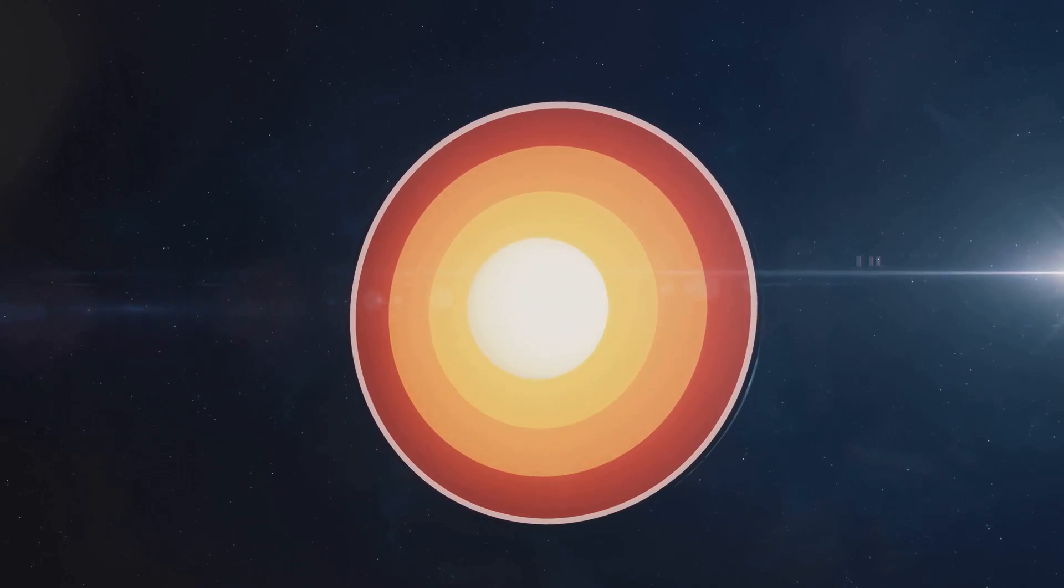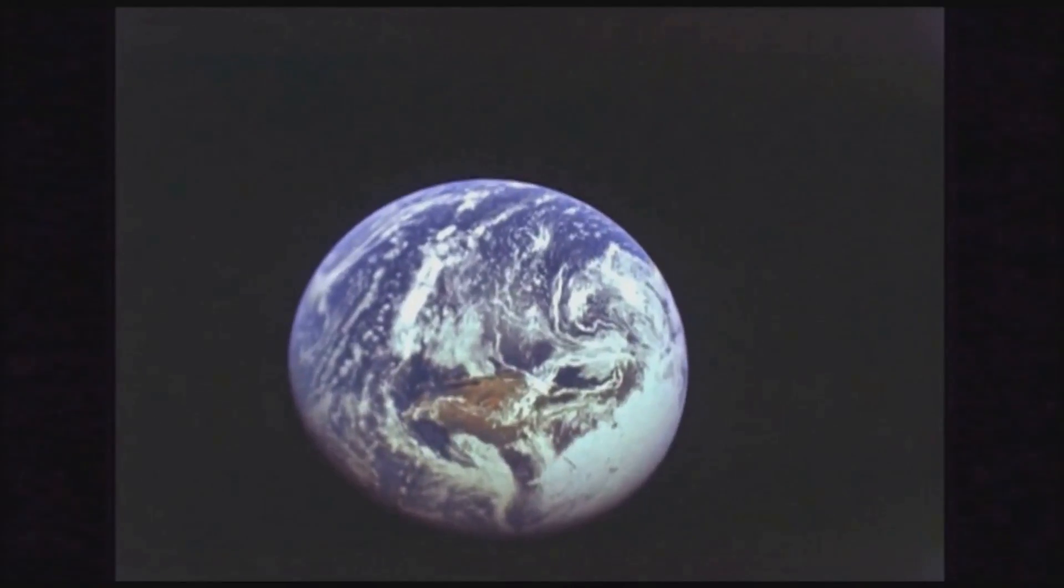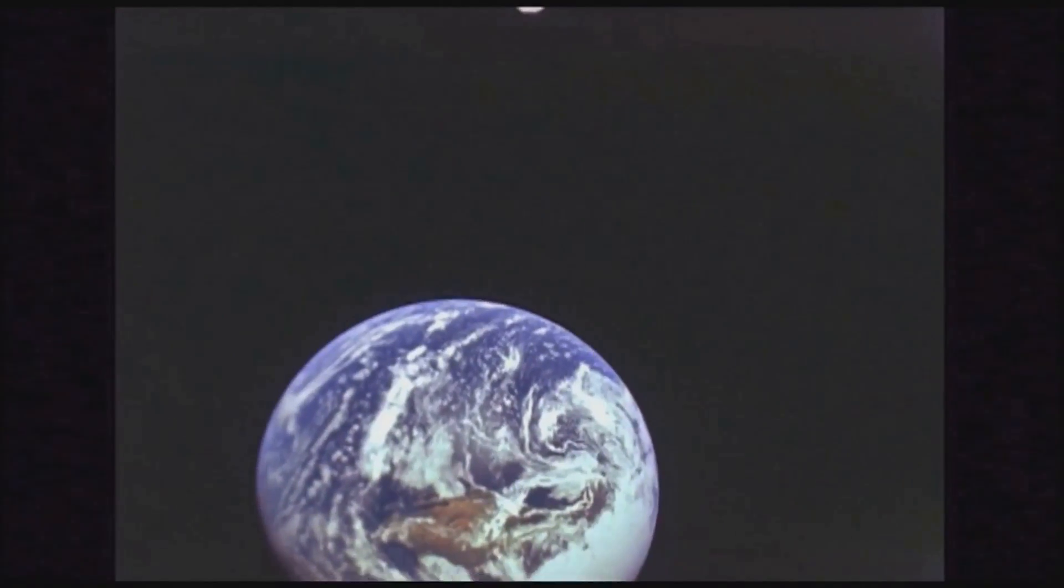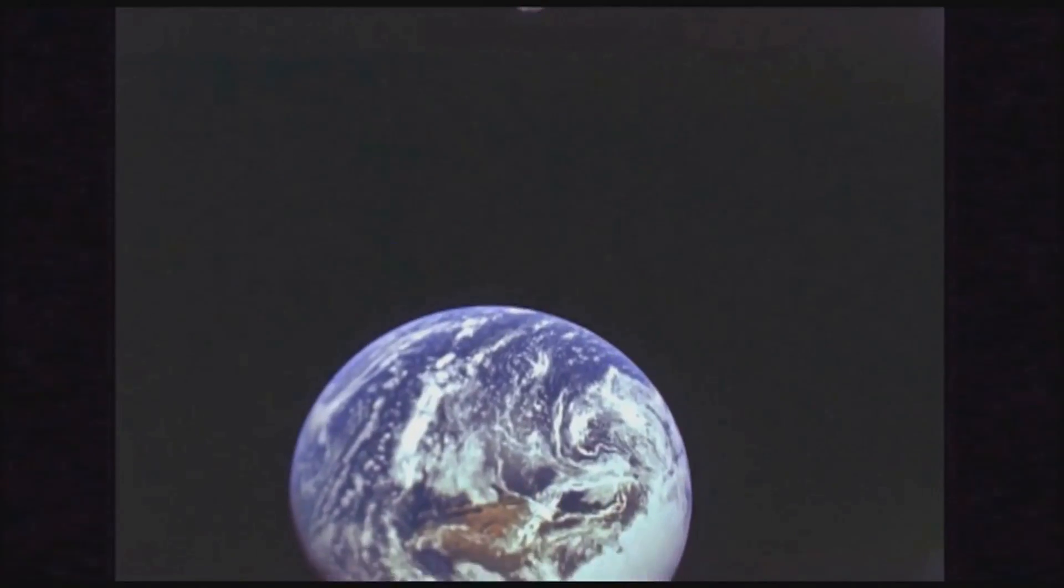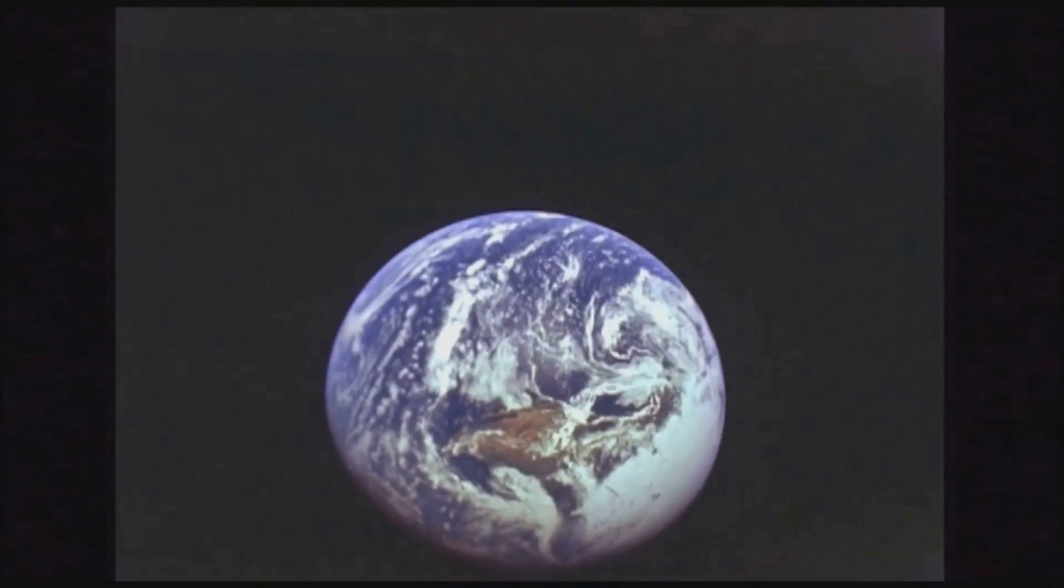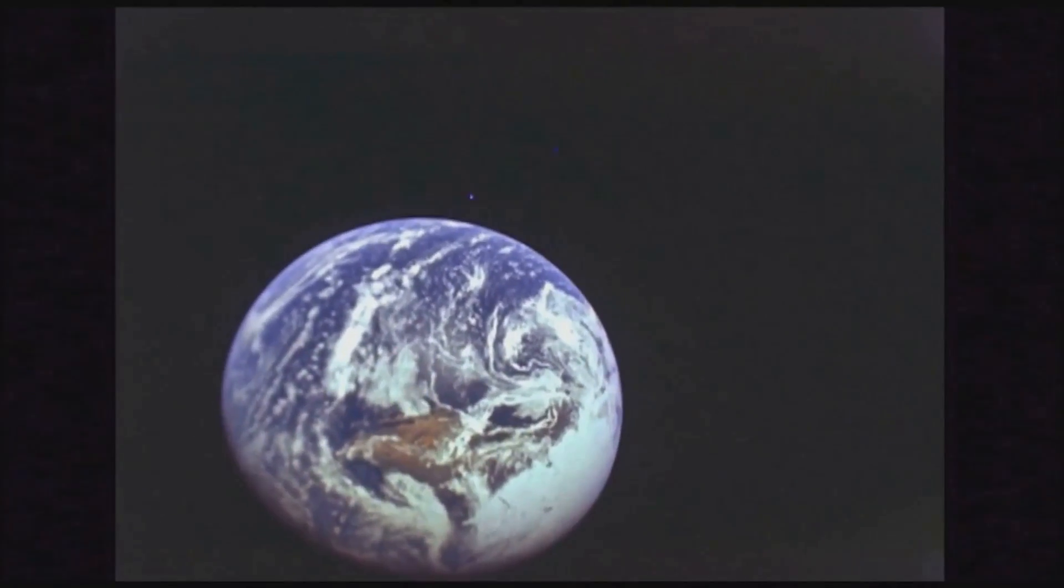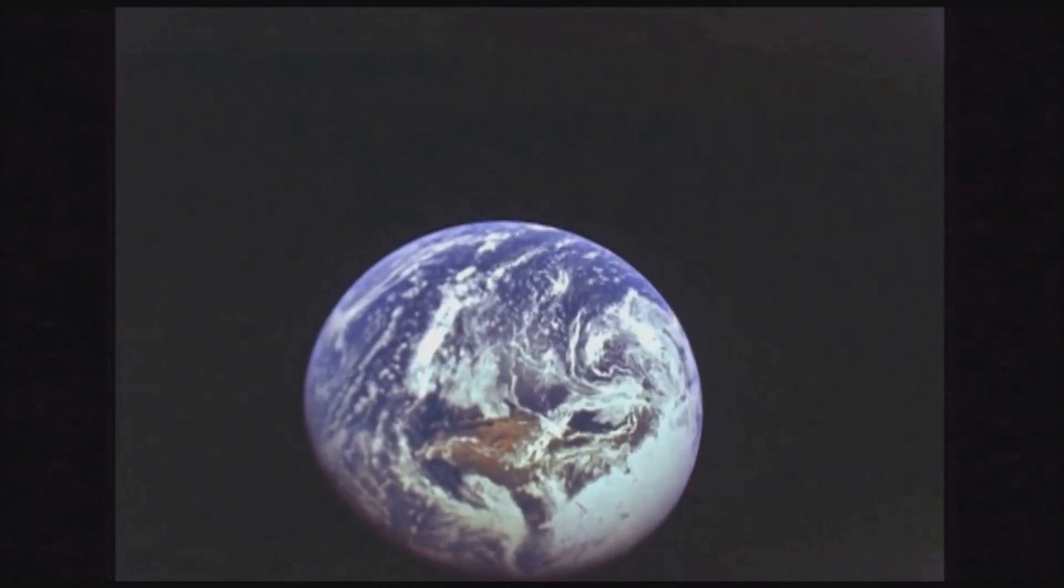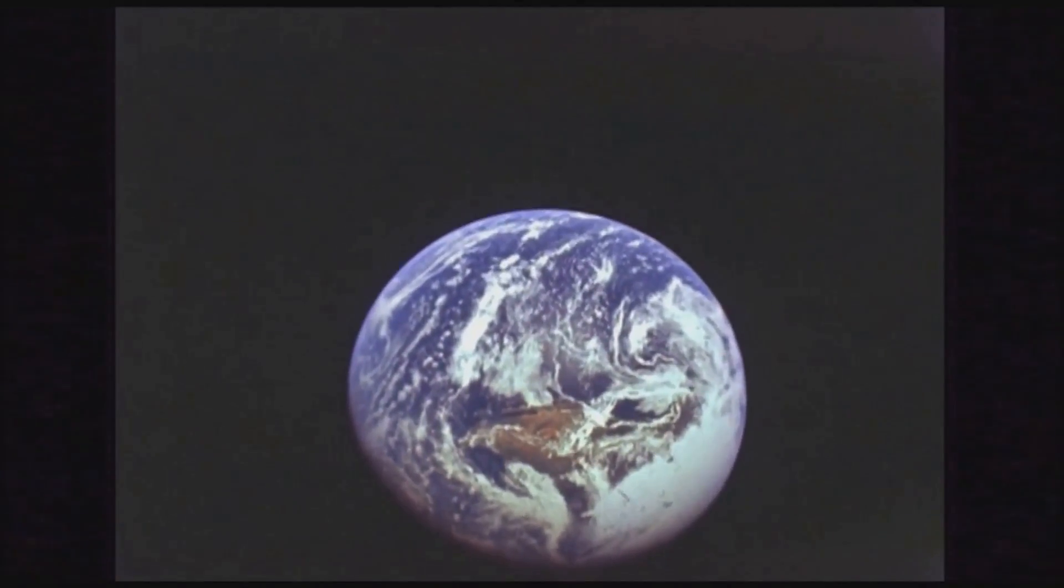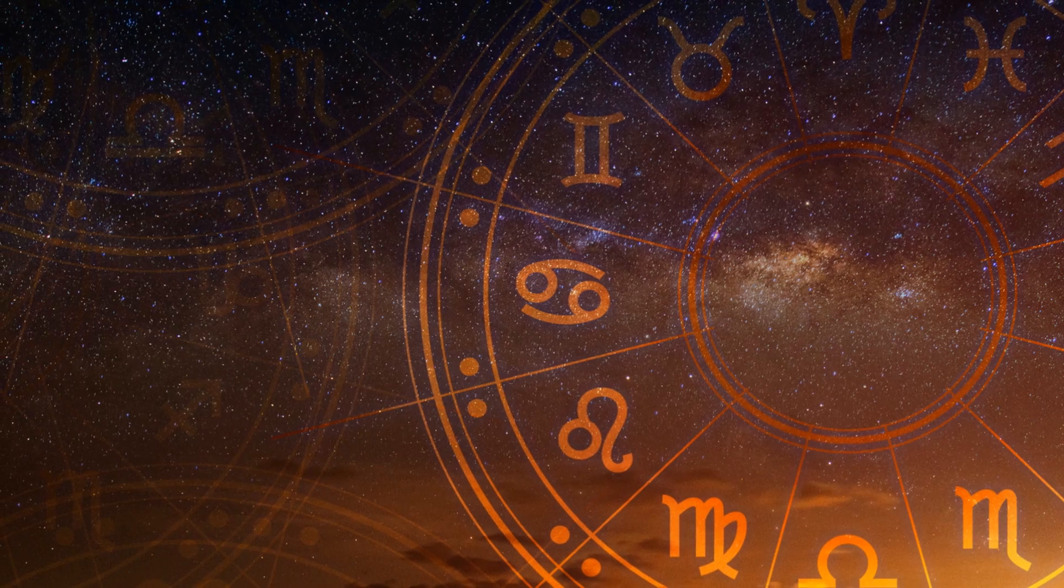Like Earth, Mercury has a molten core. But unlike our home planet, Mercury's is cooling and contracting. This cooling process has been going on for billions of years, and as the core contracts, the surface of the planet follows suit, shrinking along with it.